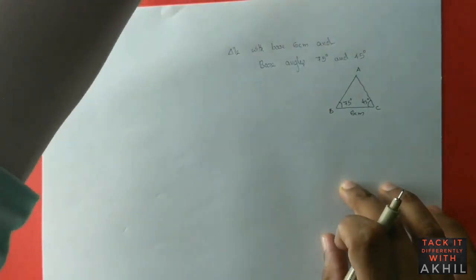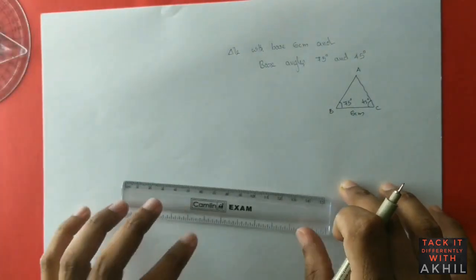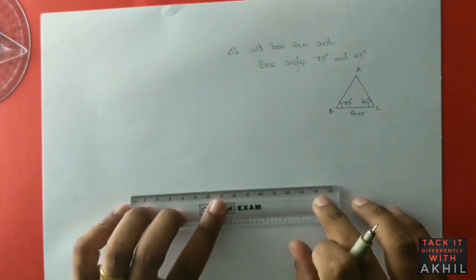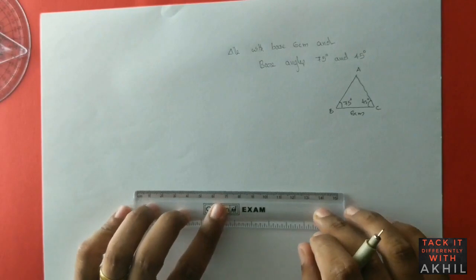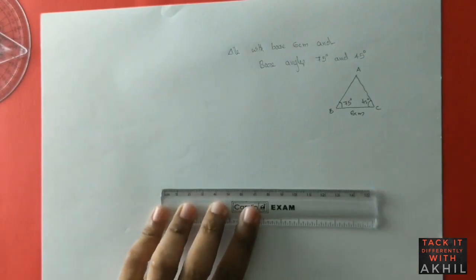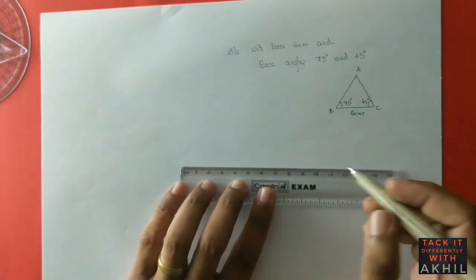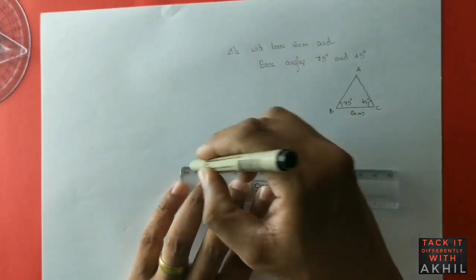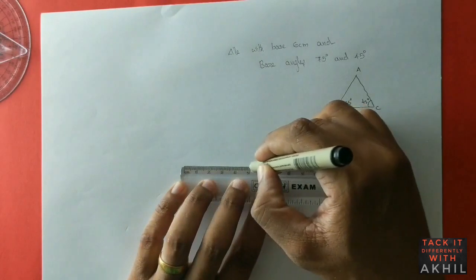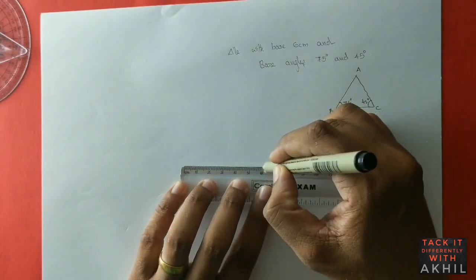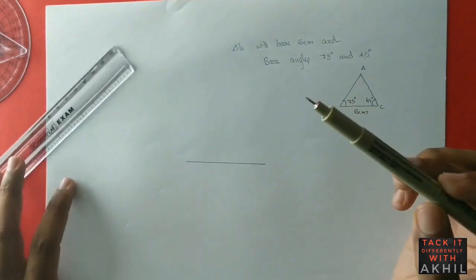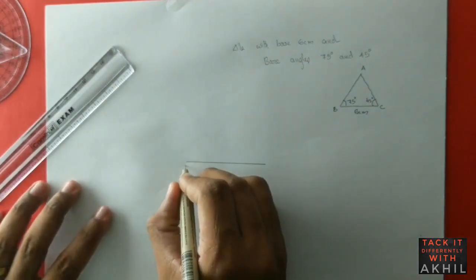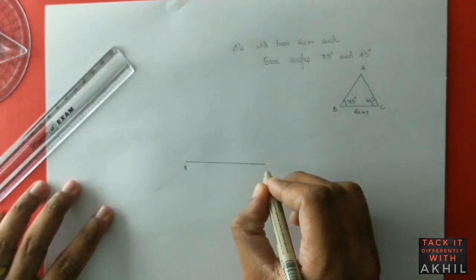As I said, this is not a shortcut or just a method — this is actually like using a cheat code in your game. Now the first thing you have to do is draw the line segment of 6 centimeters. Mark the 6 centimeter point and draw that base line. Here I am using an art-line pen; remember to always use a sharp pencil.